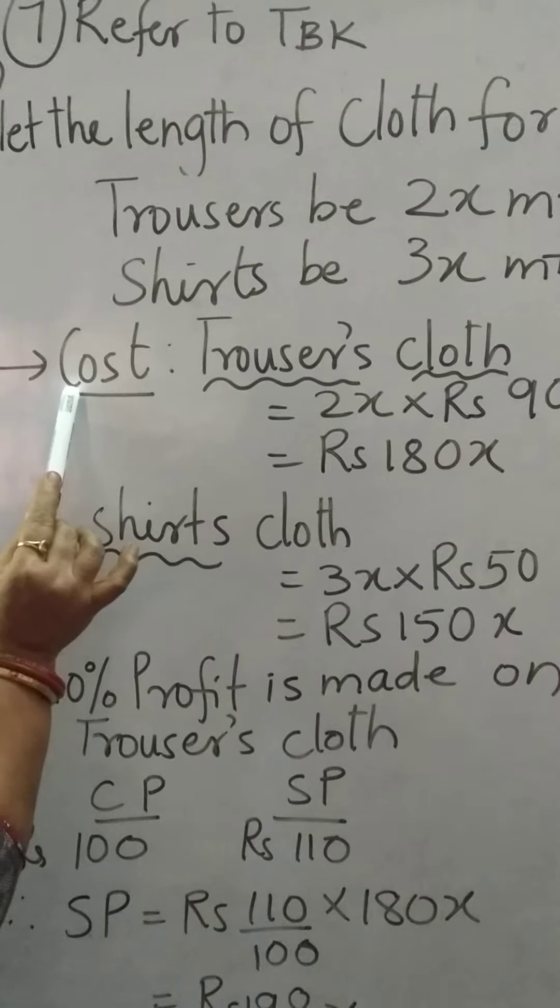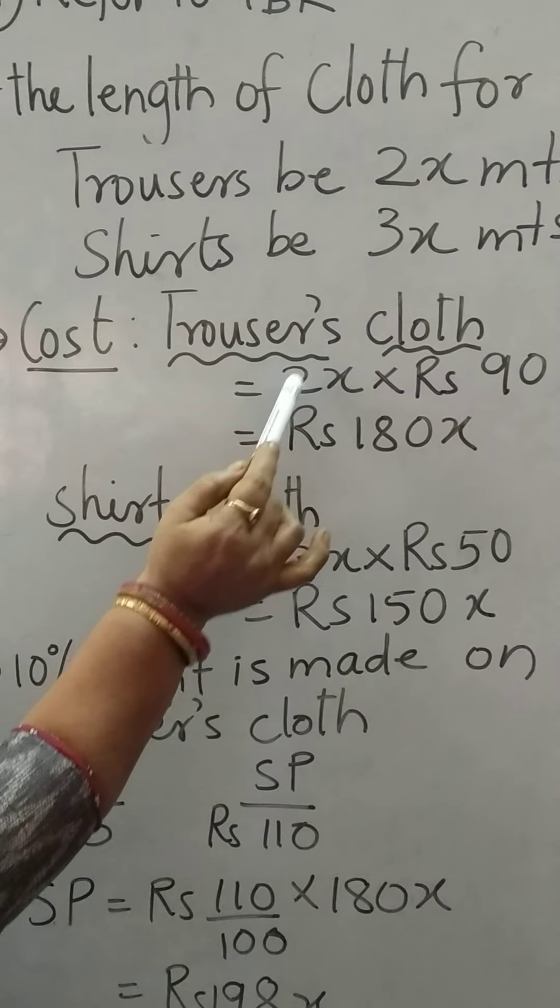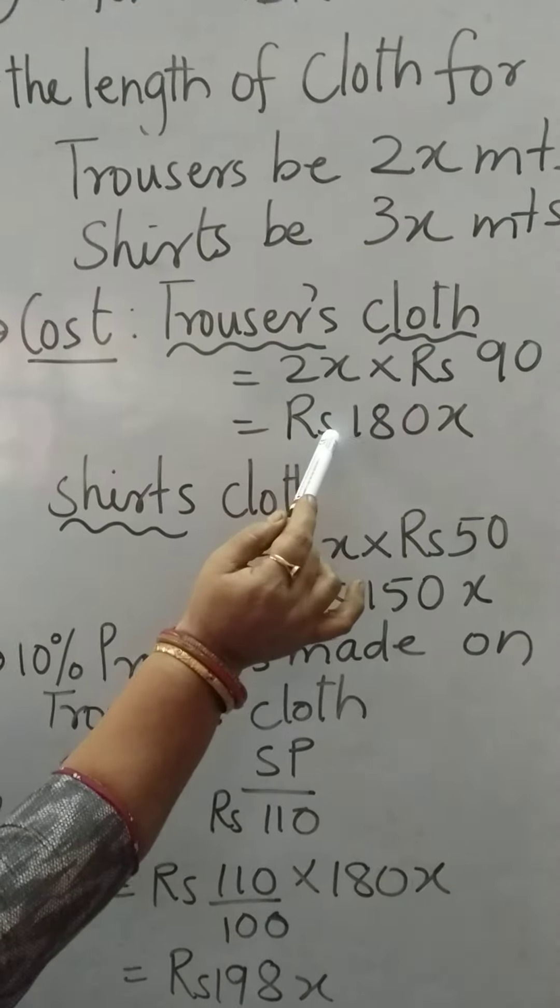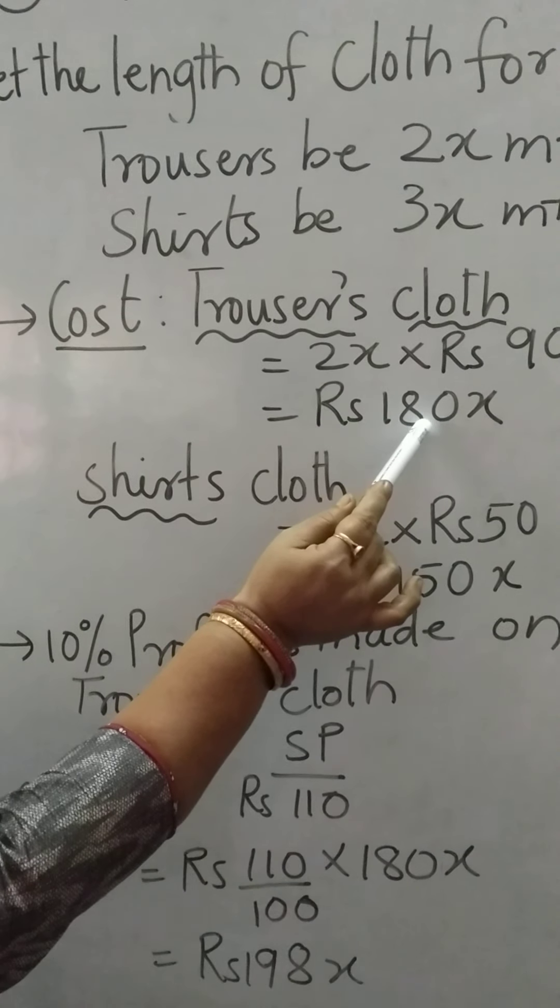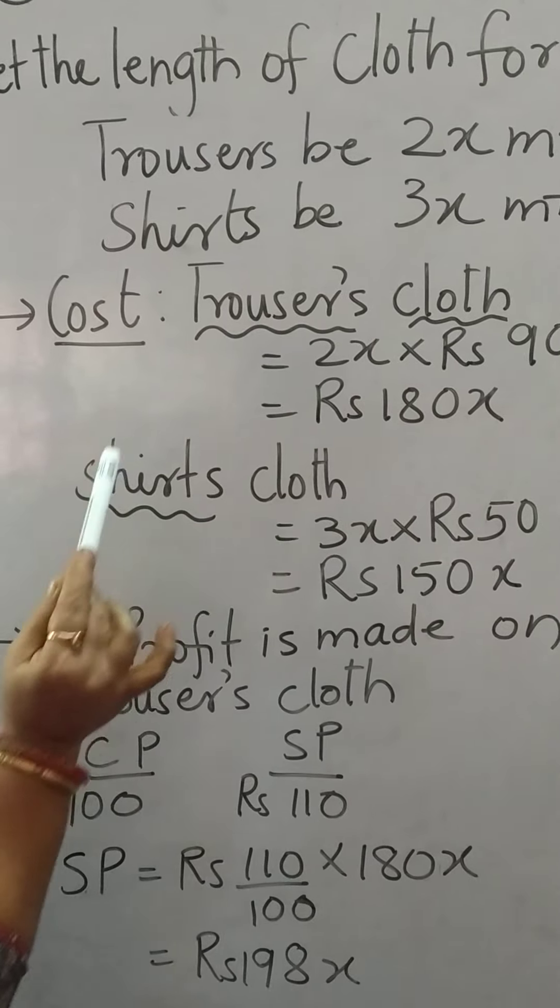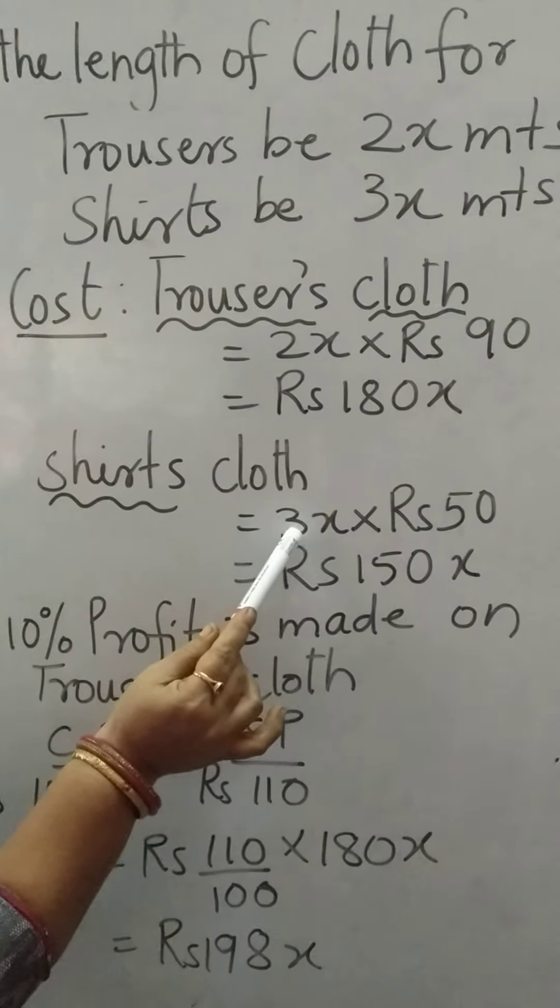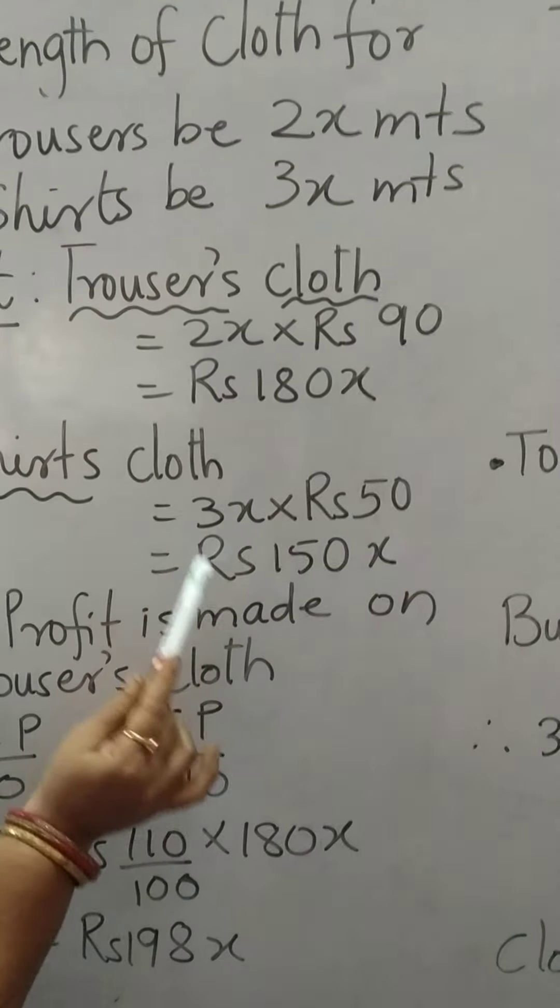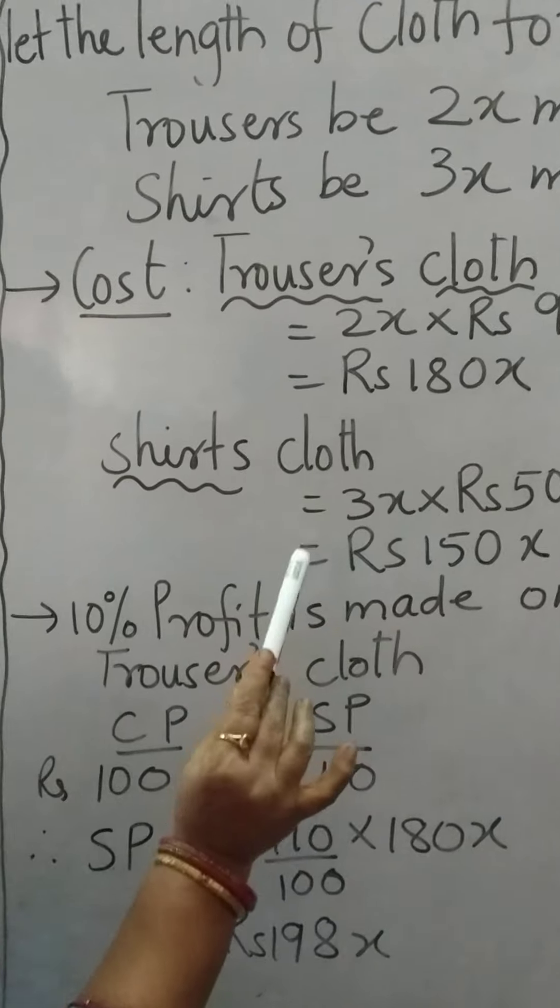Second part. Let us see the cost. Trouser's cloth is 2x into rupees 90 per meter, so we get rupees 180x. Shirt's cloth will be 3x into rupees 50, so rupees 150x.